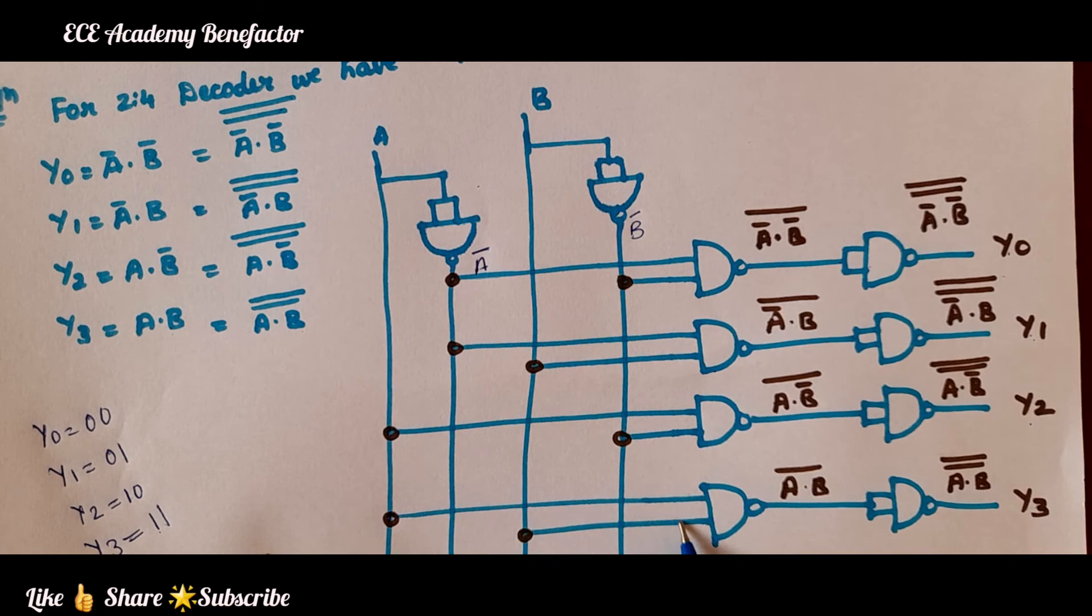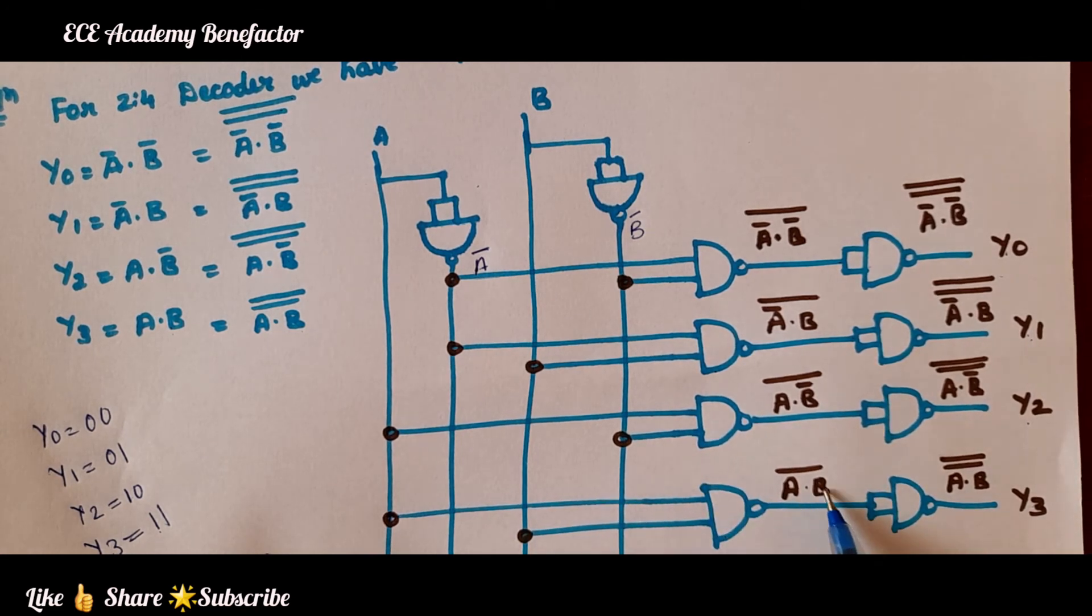A and this B is given to this NAND gate to get A·B bar. This NAND gate is passed through the NAND gate to get A·B double bar to get y3.